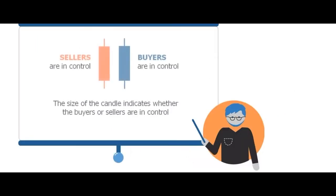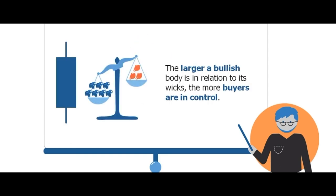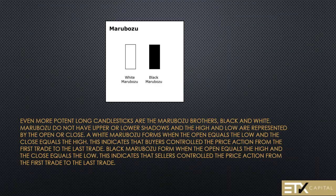So far you have learned that the size of the body of the candle indicates whether the buyers or sellers are in control - the larger a bullish body is in relation to its wicks, the more the buyers are in control, and the larger a bearish body is in relation to its wicks, the more the sellers are in control. Now that you've seen what the development of the body means and what it says to you, because it's just talking to you about a single session and what is happening.